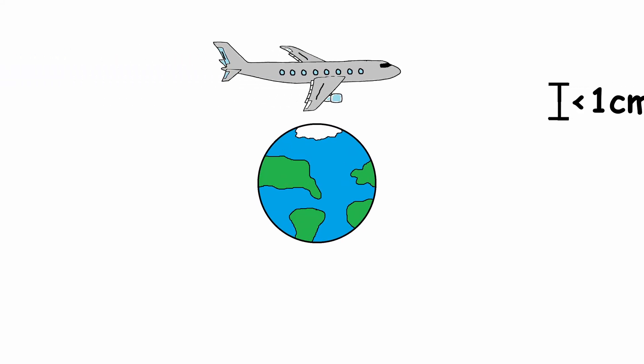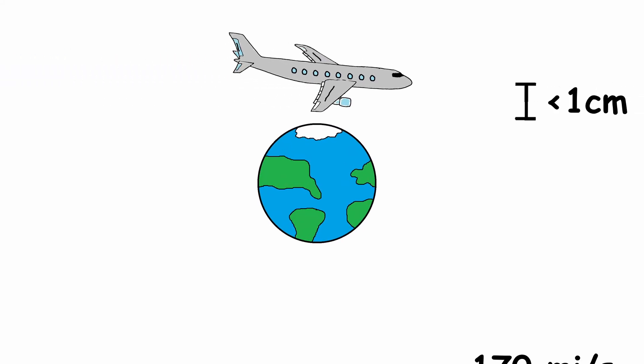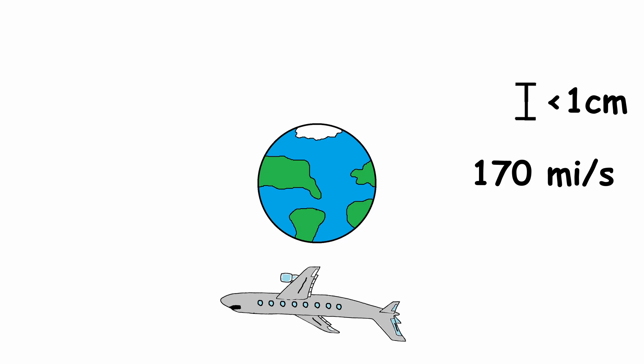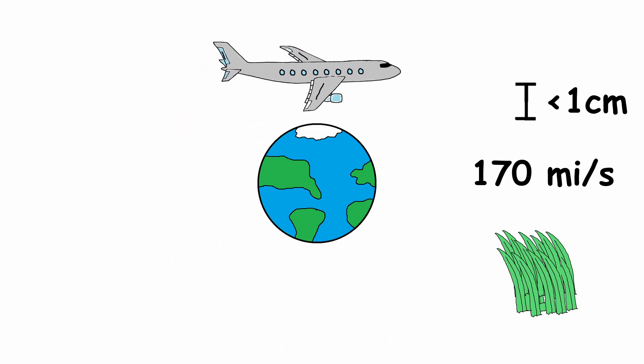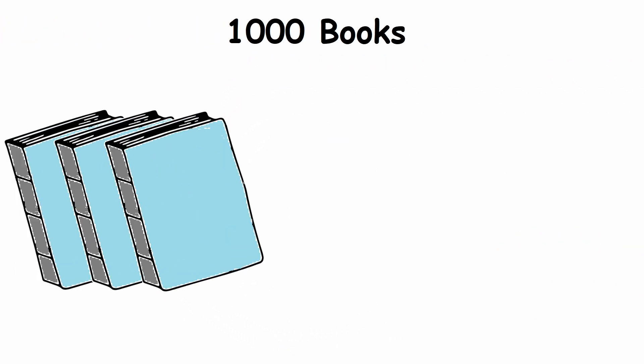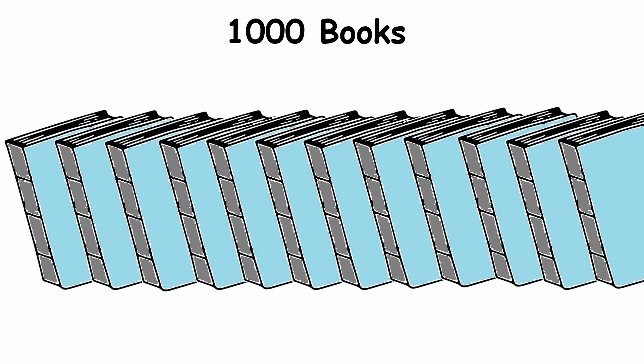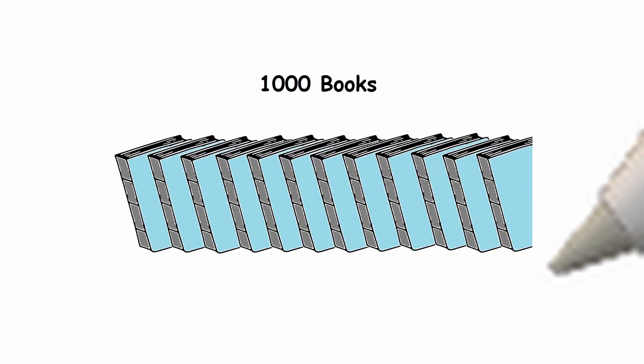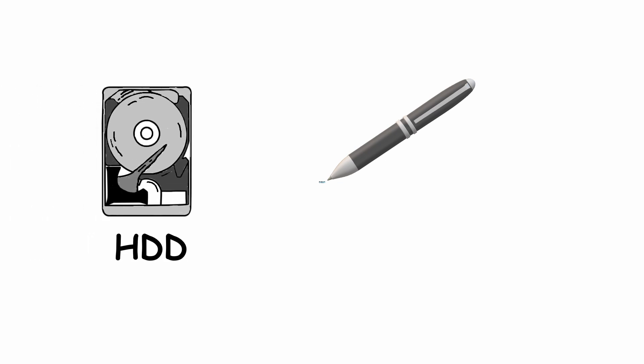Imagine an airplane flying less than one centimeter above the ground at a speed of 170 miles per second, counting every single blade of grass while making little to no errors. Or imagine if you could store 1,000 books, hundreds of thousands of words, a whole library of information, in an area equivalent to that of the tip of a ballpoint pen. Well, that's exactly what a computer hard drive does.